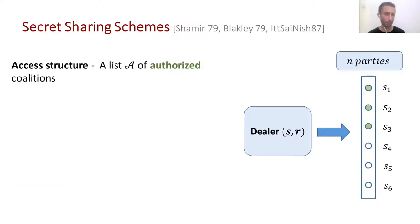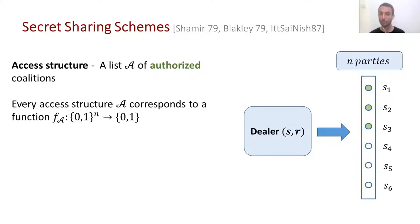And we want that any unauthorized coalition will learn nothing about the secret from the messages it received. We call the list of all authorized coalitions the access structure we deal with. Throughout the talk, we will think of access structures as Boolean functions where every authorized set is assigned one by the function and every unauthorized set is assigned zero.